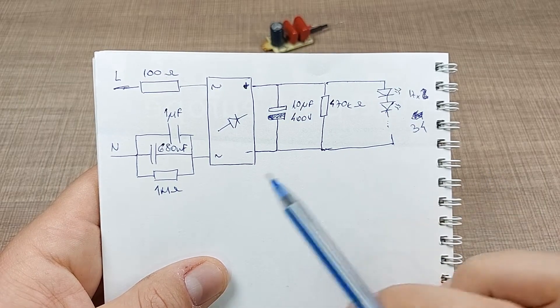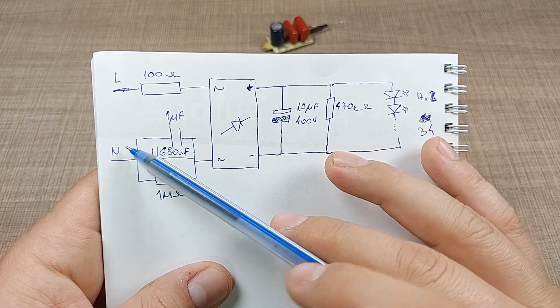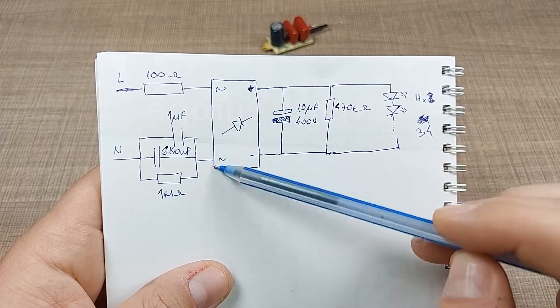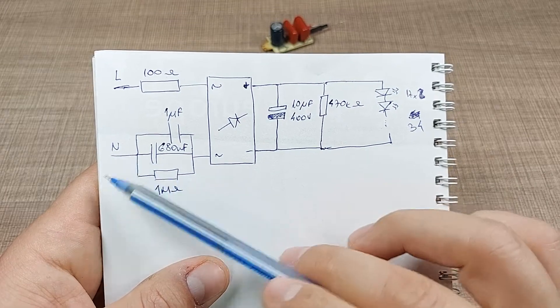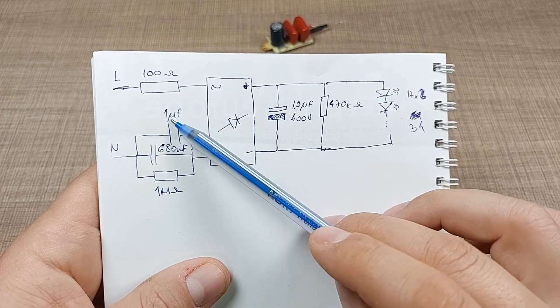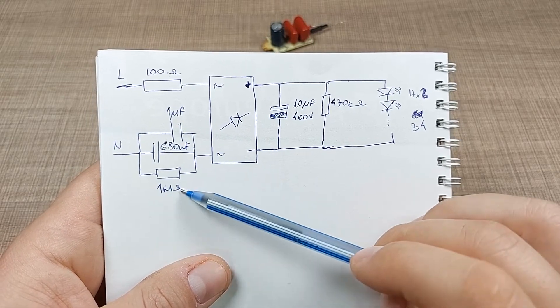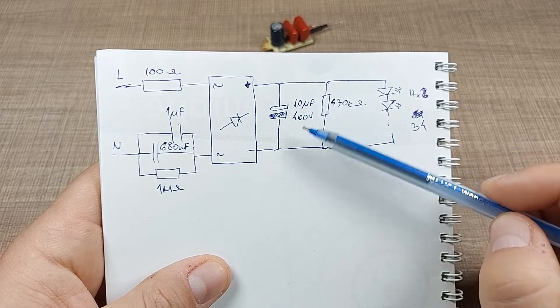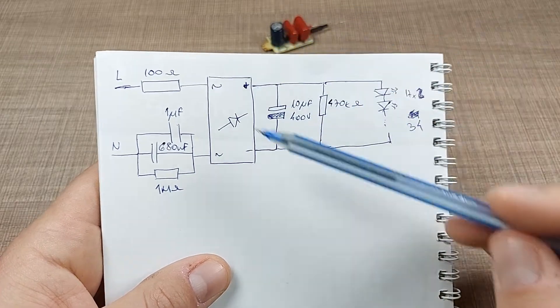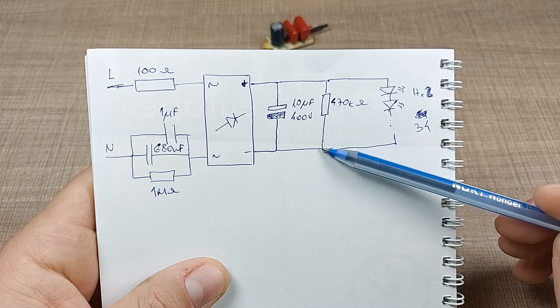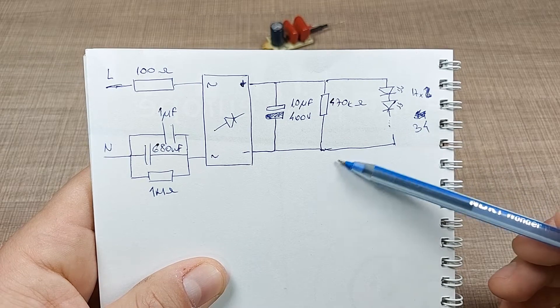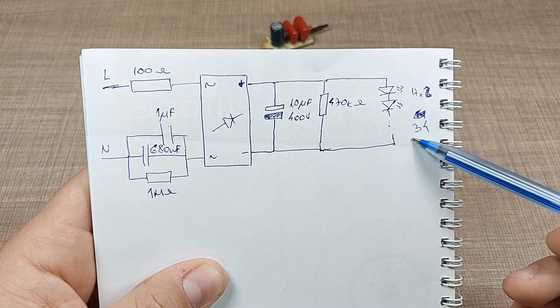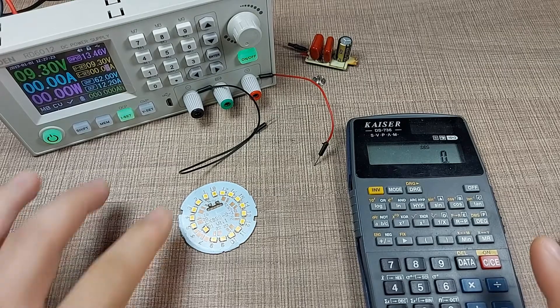Here is the schematic of the bulb. We have live and neutral coming in from one side on the board, and the live wire goes to a 100 ohm fusible resistor and then goes directly to the bridge rectifier which is unmarked. On the other side we have two capacitors in parallel, one is 1 microfarad and the other one is 680 nanofarads, and we have 1 megaohm resistor across those so they can be discharged once it's connected. On the other side we have the 10 microfarads 400 volt smoothing capacitor with the 470 kilohm resistor across that, and then it's the series of LEDs. We have 17 chips with what I believe is two LEDs per chip with a total of 34 LEDs.